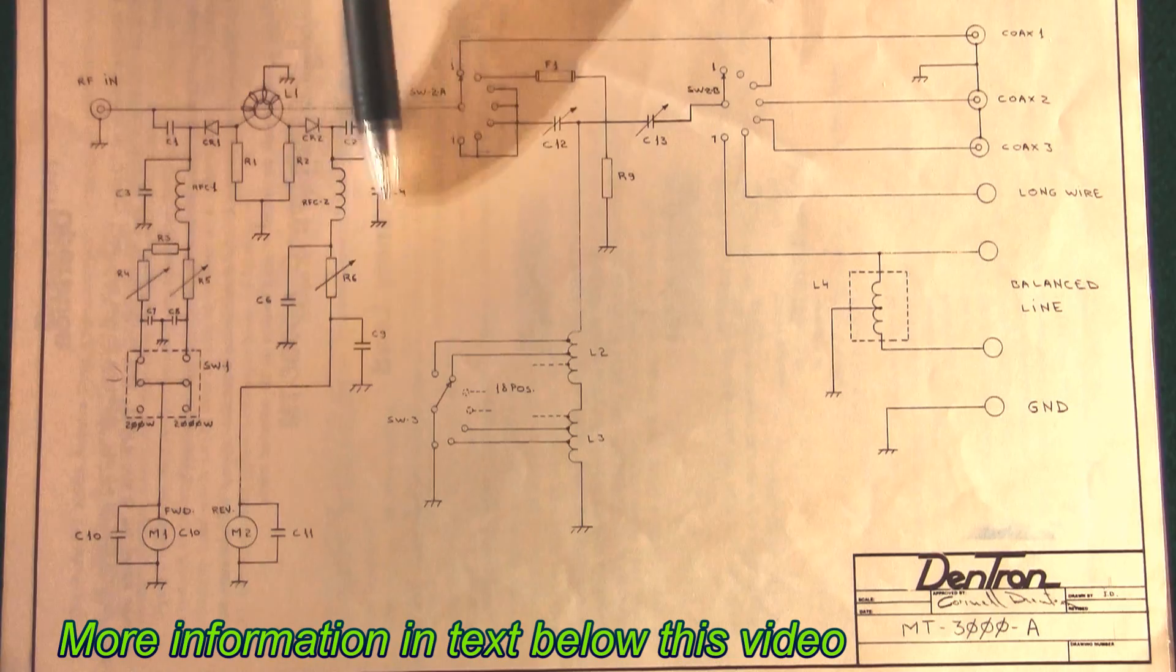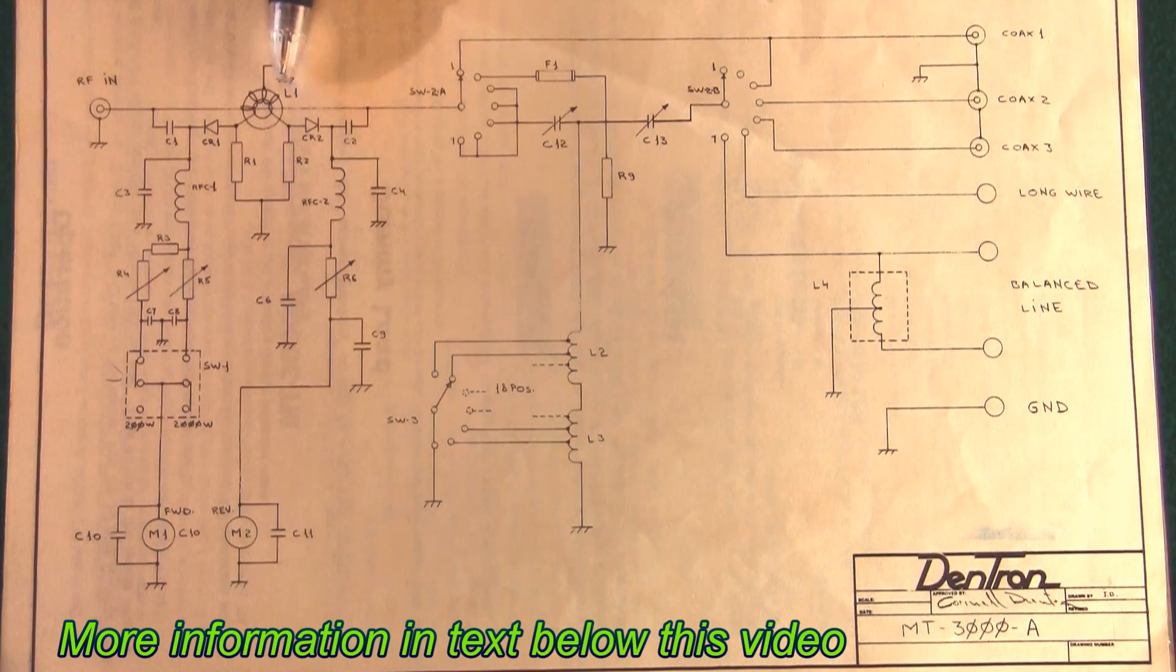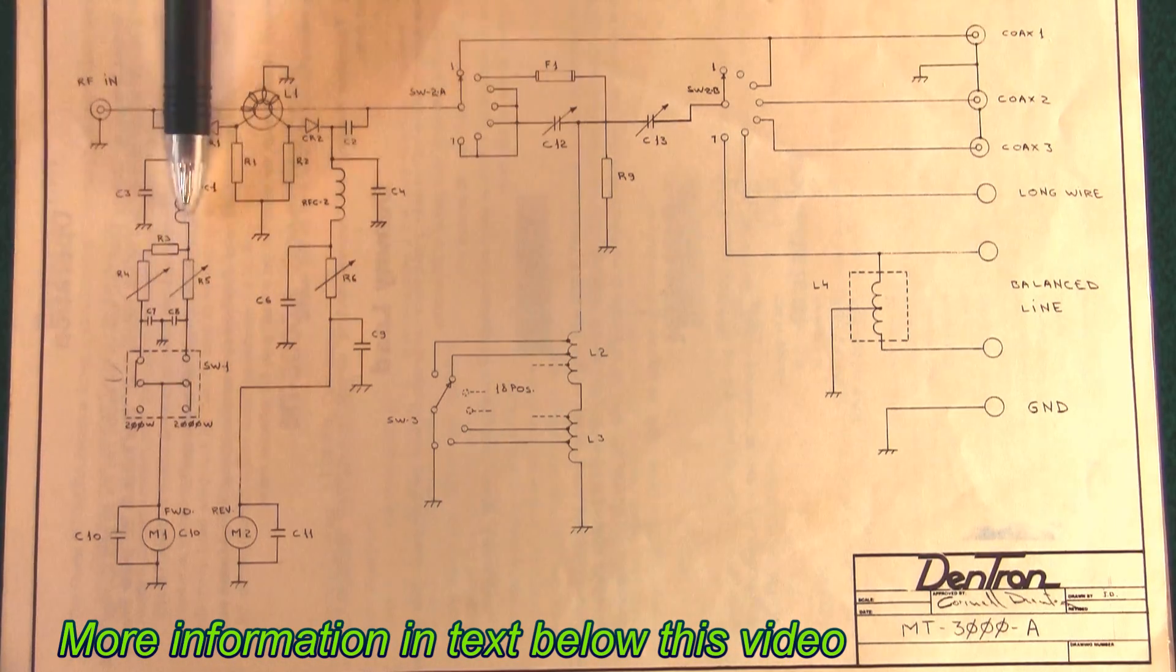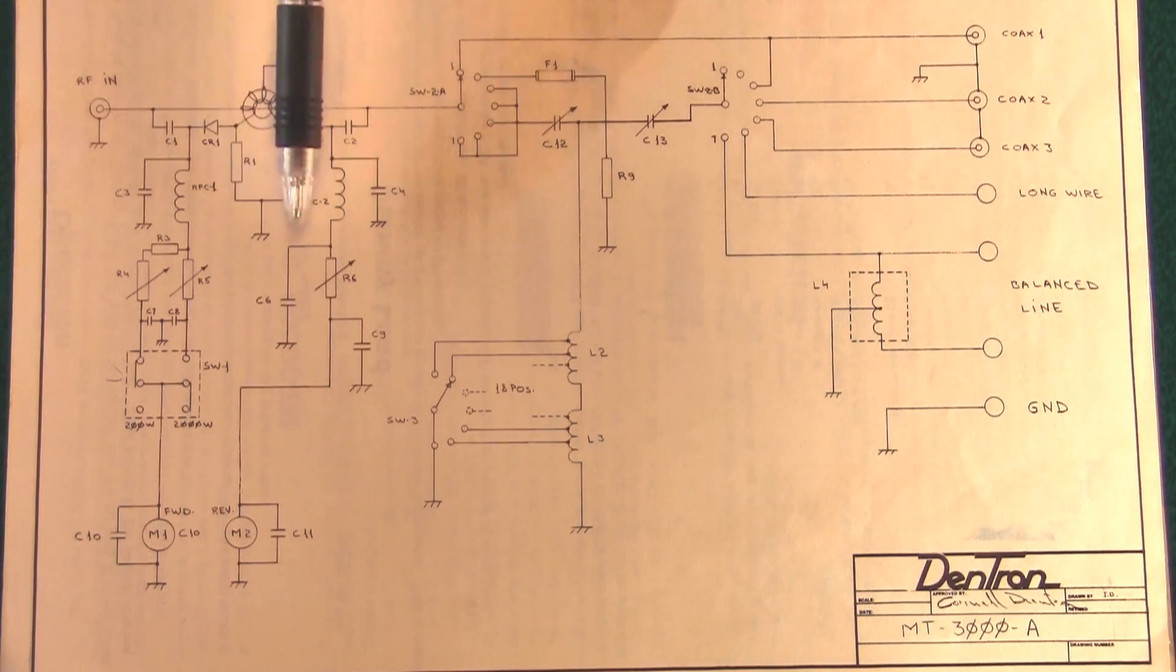There's a little ferrite. This whole circuitry right in here is the SWR circuitry. This has a forward reading circuit and a reverse reading circuit. So you can read forward current, reverse current. And there's a switch on here for 200 watts or 2,000 watts.